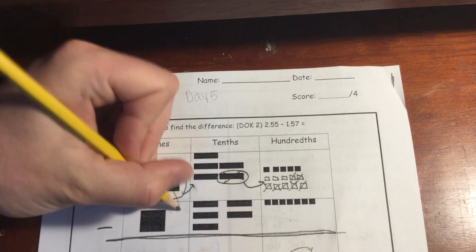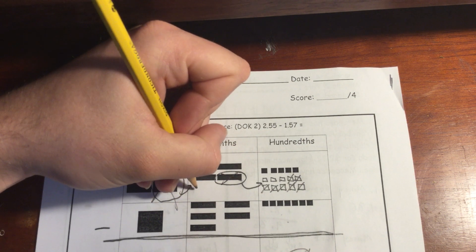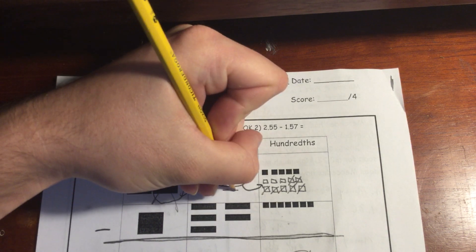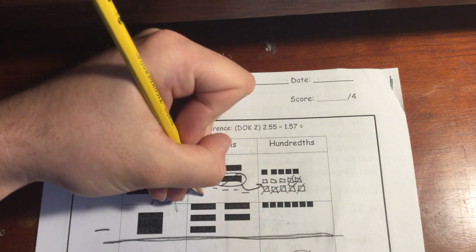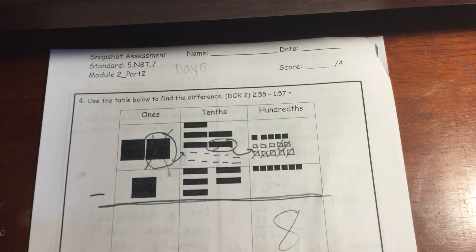One, one is equal to 10 tenths. So I'm going to draw out 10 tenths. So one, two, three, four, five, six, seven, eight, nine, ten. So I drew out 10 tenths.